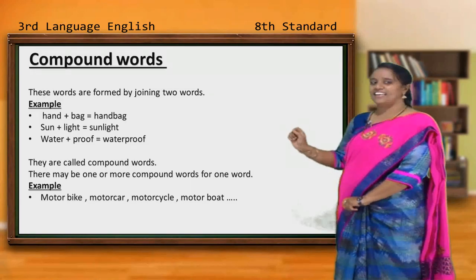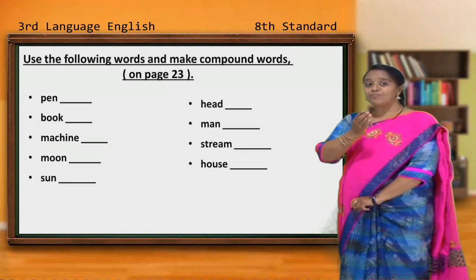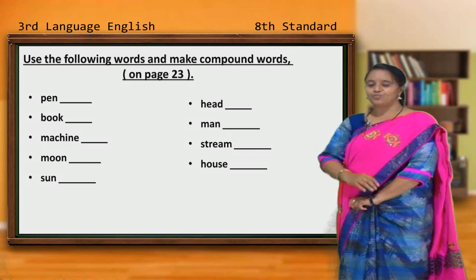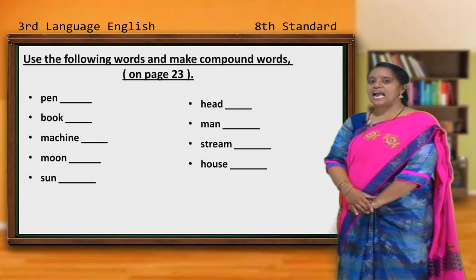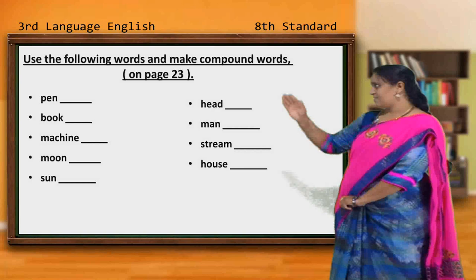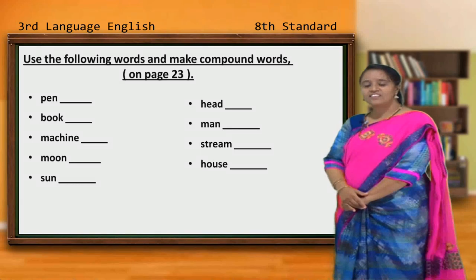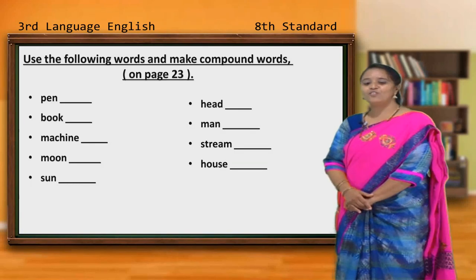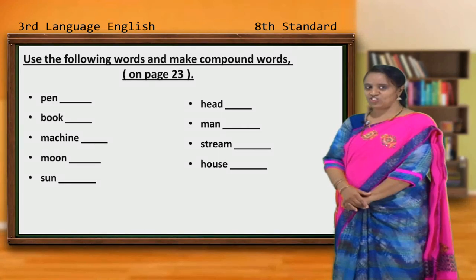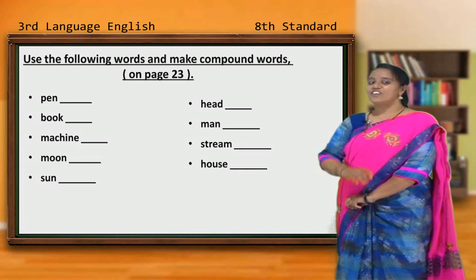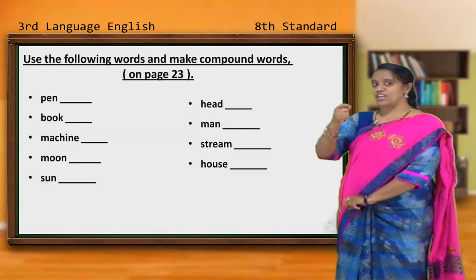Now, it's time for your work. On page number 23 in your textbook, there is an activity for you. Use the following words and make compound words. By looking at these words, you have to make compound words. Take your pencils — I will read out the words for you. Later, we will go one by one. Pen, book, machine, moon, sun, head, man, stream, house.